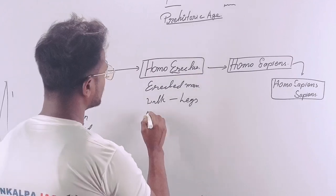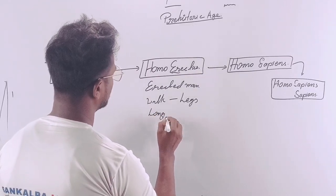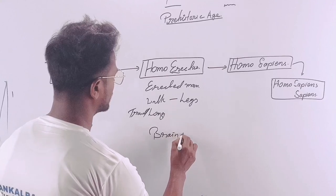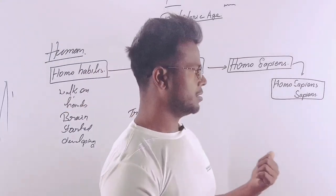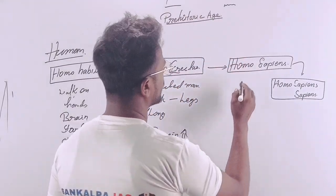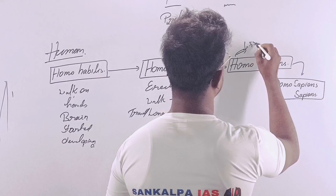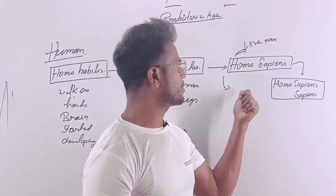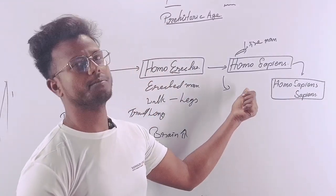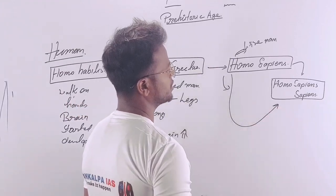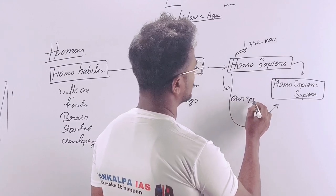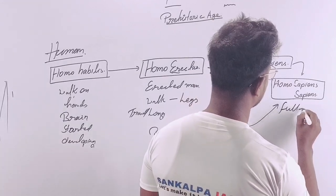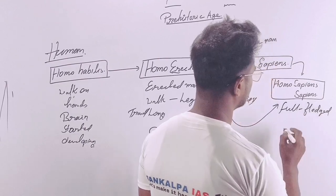Homo erectus means 'erected man' — the man of two legs, so they could travel long distances. The brain further developed compared to Homo habilis. Then came Homo sapiens, meaning 'wise man,' and it is from Homo sapiens that our species has evolved into a full-fledged modern man.